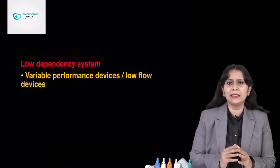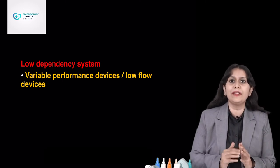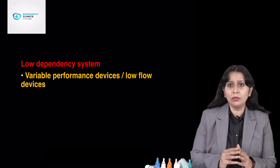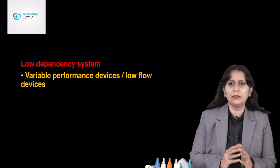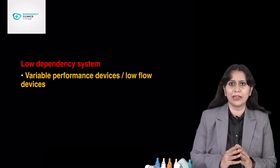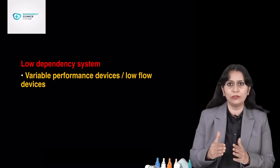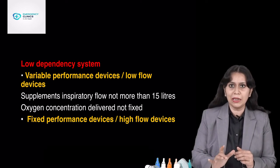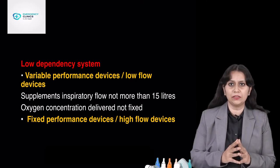In these devices, FiO2 cannot be fixed by us — it depends totally on the ventilation of the patient. So if the patient has stable ventilation and a stable breathing pattern, then only the required FiO2 will be delivered. Otherwise, a lot of dilution by room air will happen and the device will not deliver the required FiO2. So they are variable performance, low flow devices — they supplement inspiratory flow not more than 15 liters per minute and the oxygen concentration is not fixed.